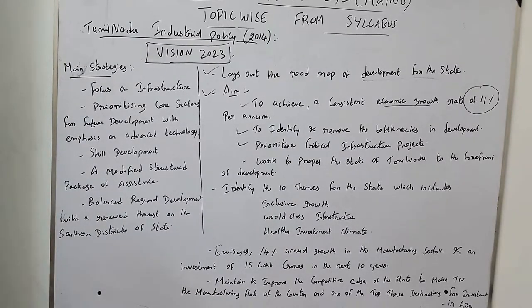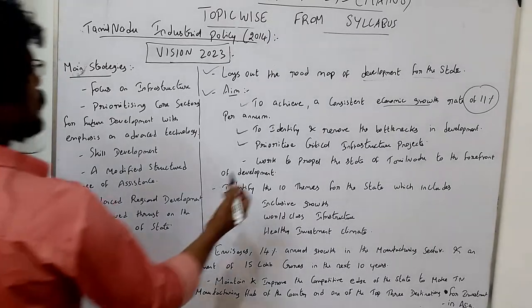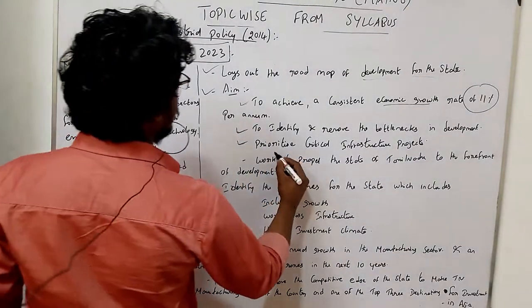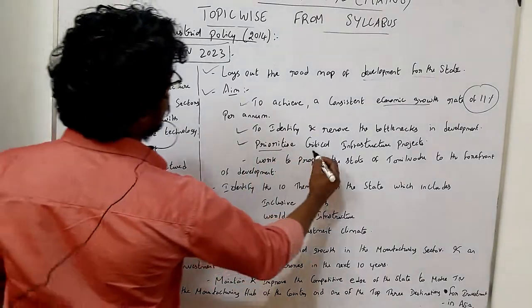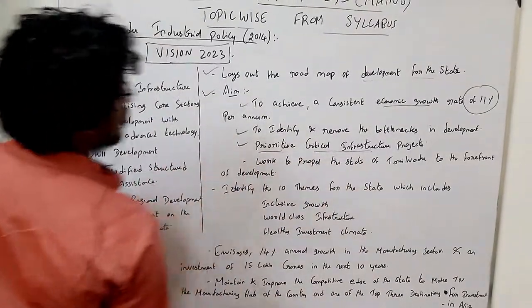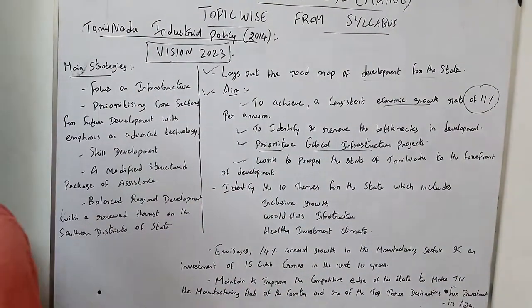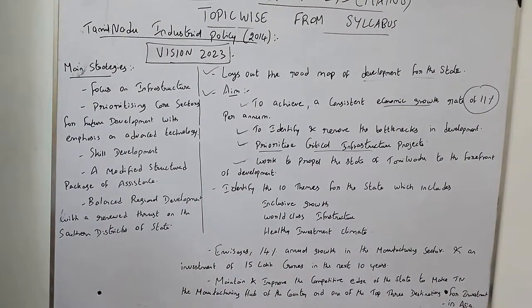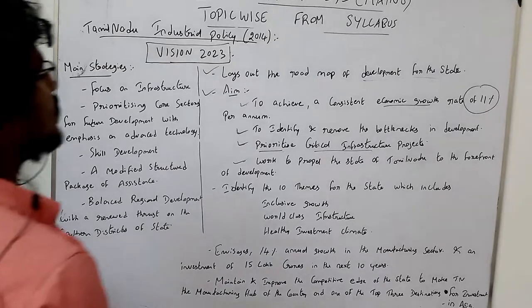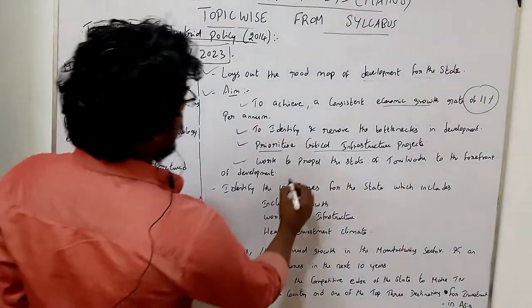This is road infrastructure development. This report is prioritized. The fourth aim is to work to propel the state of Tamil Nadu to the forefront of development.